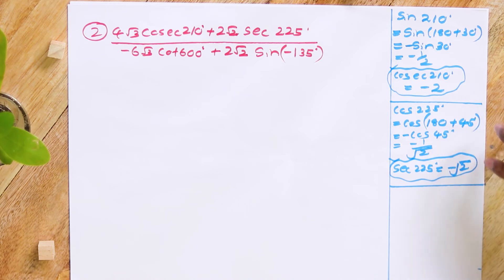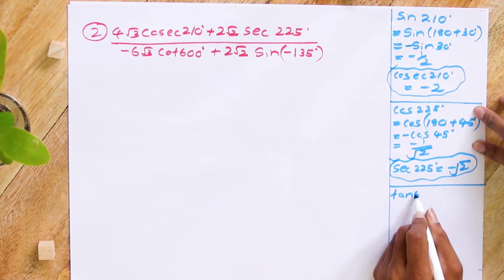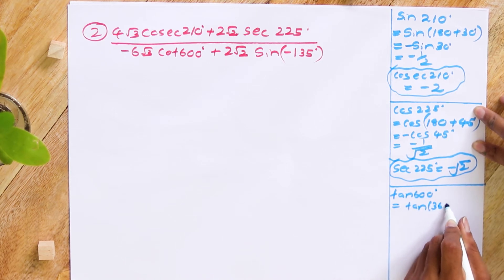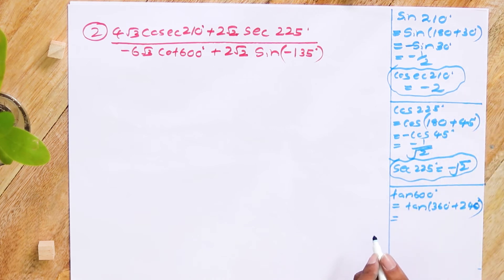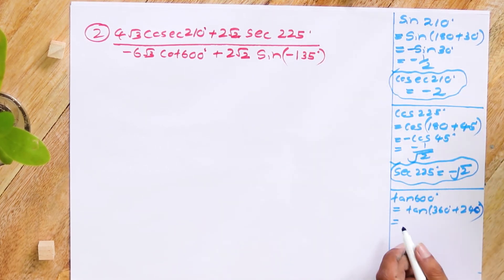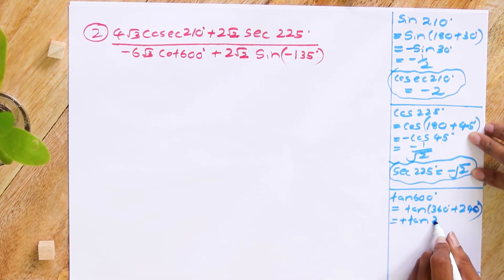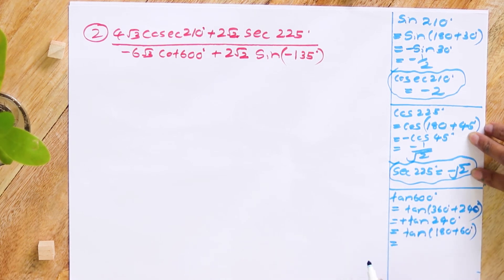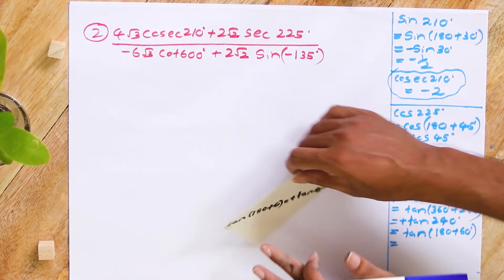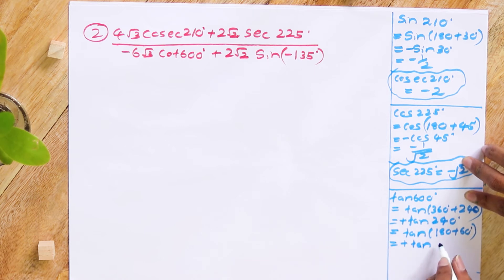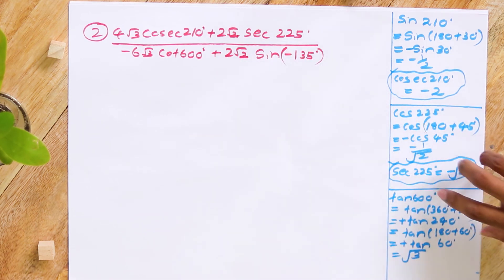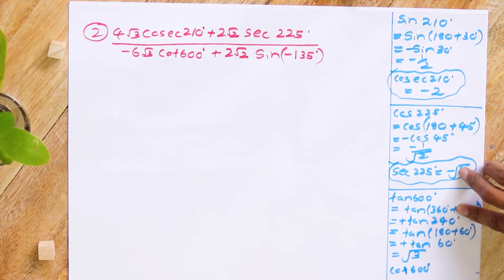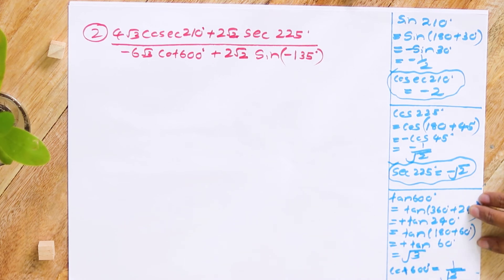Moving on to cot 600°. Instead of finding cot 600° directly, I'll find tan 600°. Tan 600° = tan(360° + 240°), and since tan(360° + θ) = +tan θ, this equals tan 240°. Tan 240° = tan(180° + 60°), and since tan(180° + θ) = +tan θ (third quadrant), this equals tan 60° = √3. Therefore cot 600° = 1/√3.